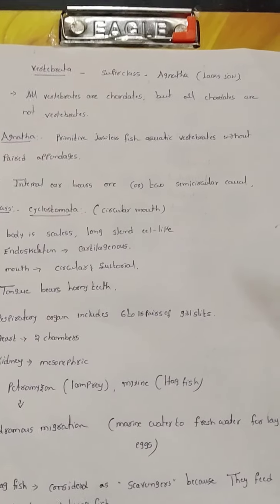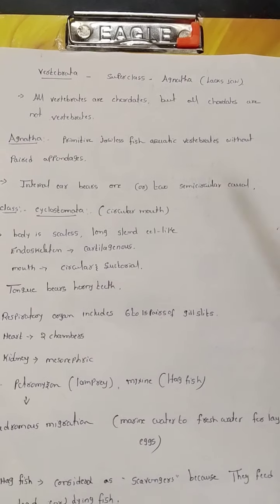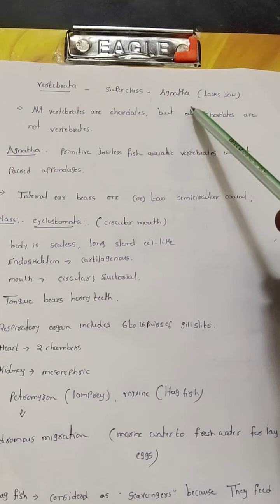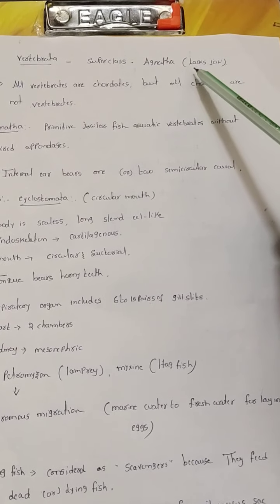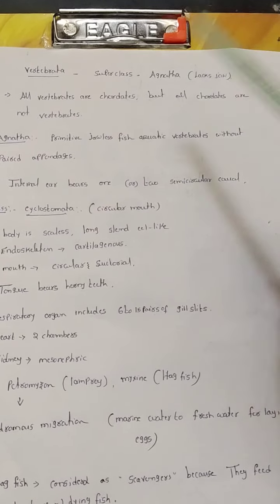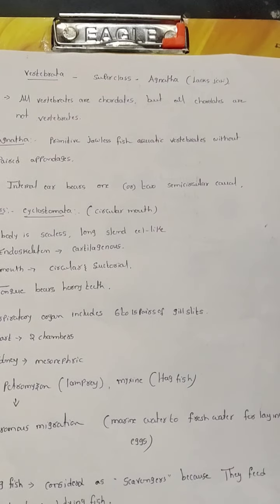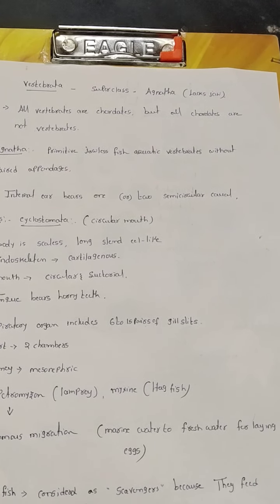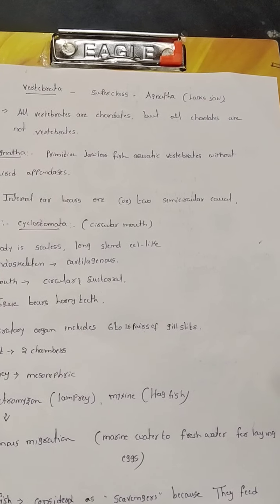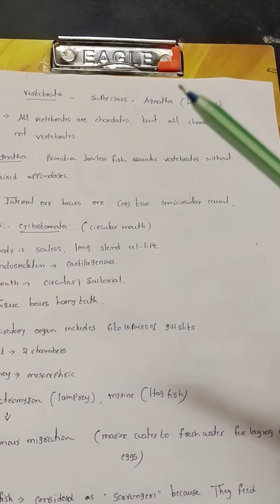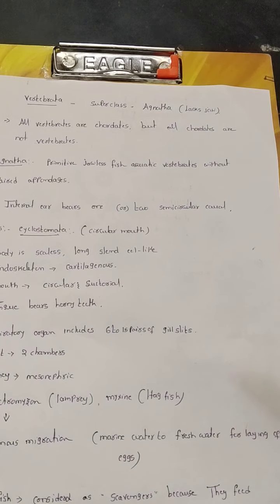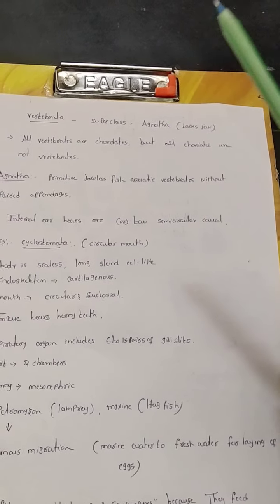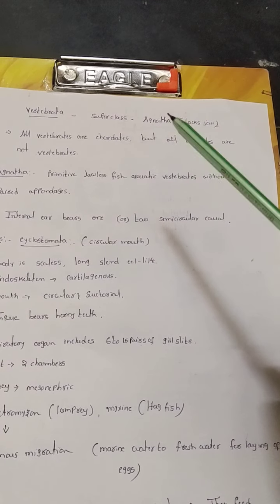Today we will discuss vertebrata. Vertebrata has two super classes: one is Agnatha and another is Gnathostomata. 'A' indicates absence, so Agnatha indicates lack of jaws. All vertebrates are chordates but all chordates are not vertebrates. For protochordates, they have a notochord that does not develop into a vertebral column, whereas in vertebrates the notochord develops into the vertebral column.